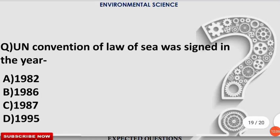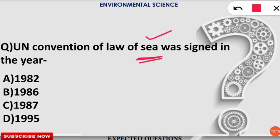The next question: the UN Convention on the Law of the Sea was signed in which year? This refers to the sea (ocean), not Strategic Environmental Assessment. The correct option is A — the UN Convention on the Law of the Sea was signed in 1982 for the purpose of protecting the seas.